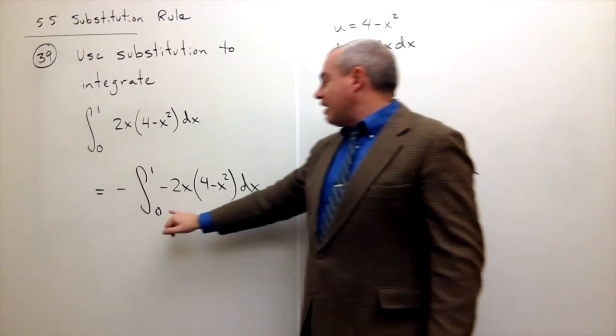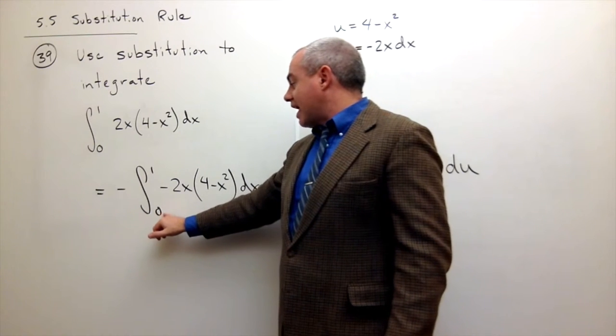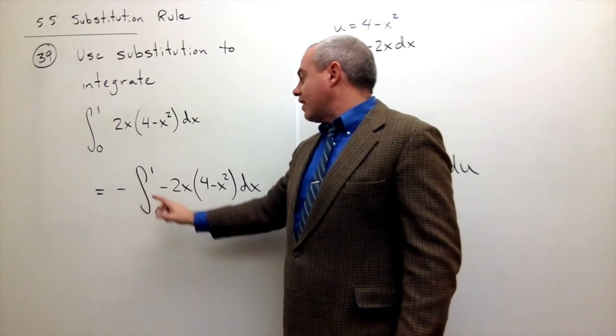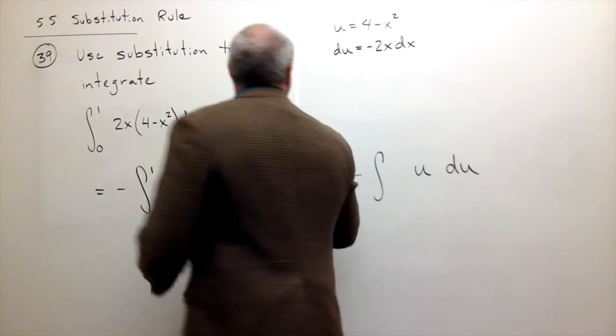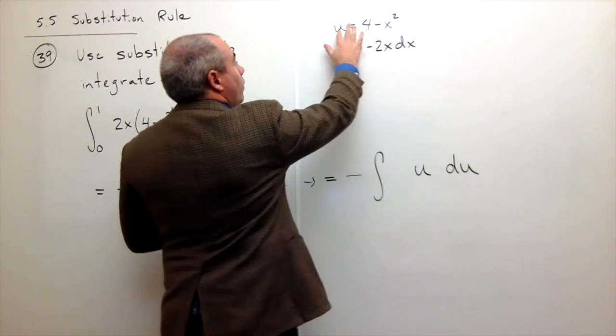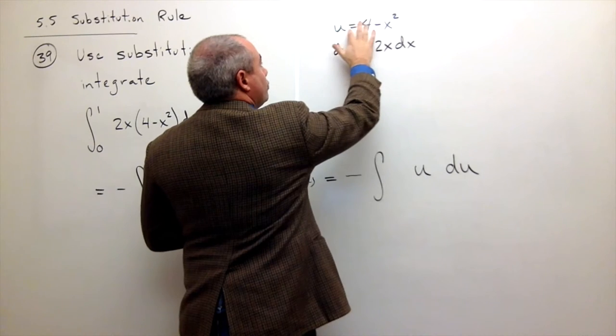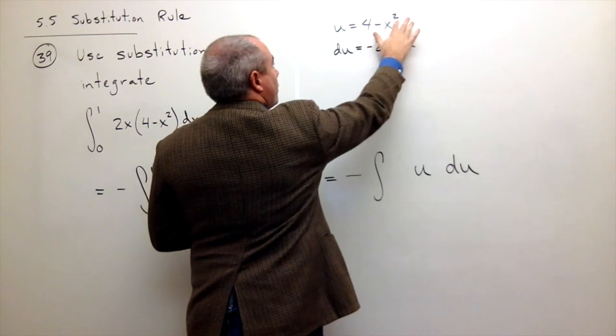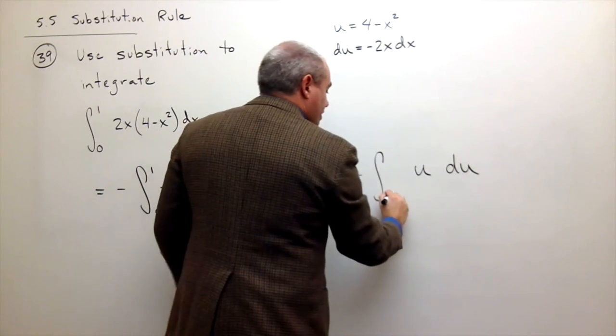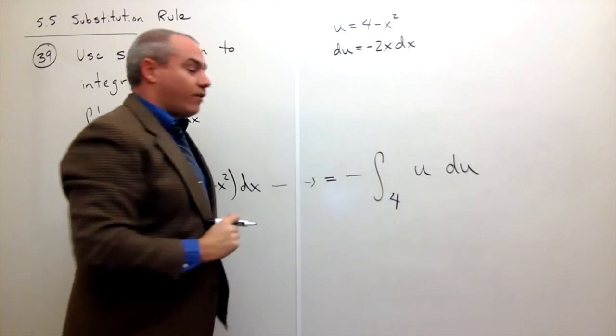So what I do is I say, okay, if x is 0, remember this is an x value, if x is 0, then what is u? Well, I could just plug in 0 up here for x. And I get that u would be 4 minus 0 squared, or just 4. So this value right here is now a 4.